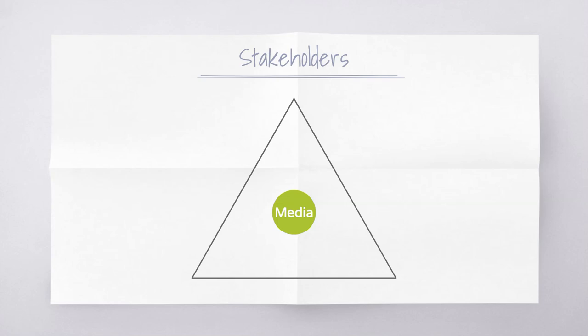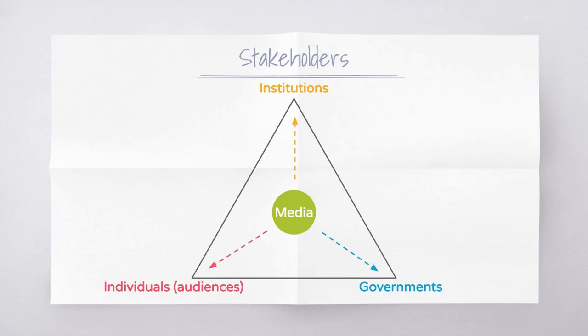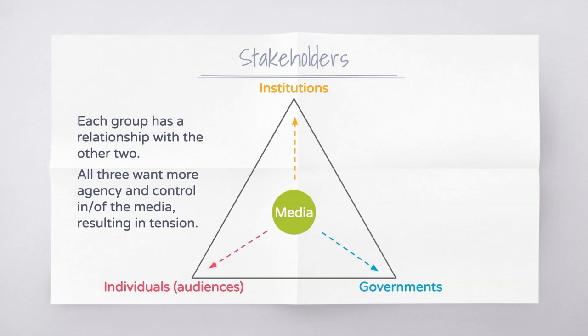If we think about the relationship between these stakeholders, think of it almost as a triangle where the media is in the middle, and these three parties are trying to wrestle with each other to gain more agency and control of that media. We have the institutions who produce and distribute the media, the audiences who try to find media that appeals to them, and the governments who want to ensure the relationship between institutions and individuals is a healthy one — so governments try to butt in from time to time. Each group has a relationship with the other two; all three want control, and all three want to limit the agency of the others.